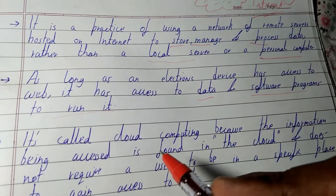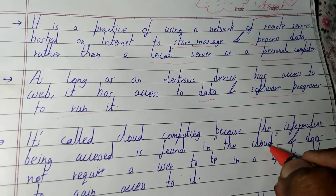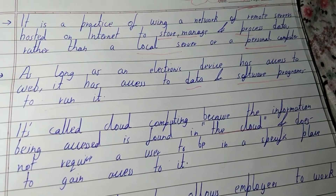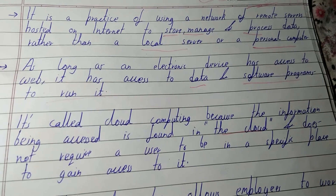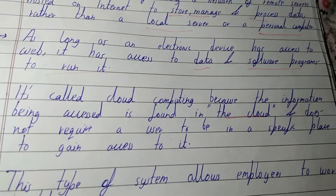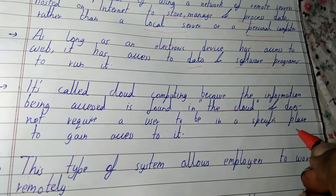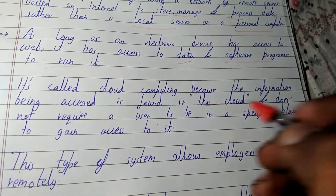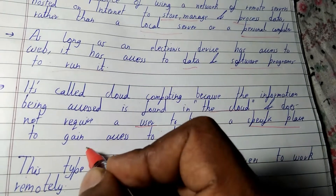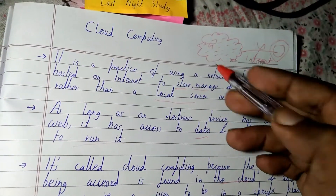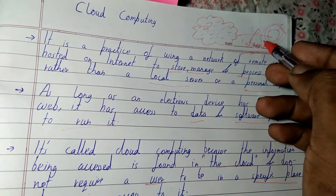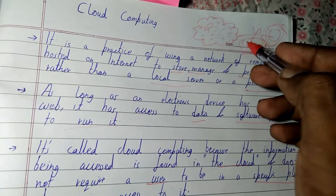It is called cloud computing because the information being accessed is found in the cloud — a virtual cloud where you can store, process, and manage data. It does not require a user to be in a specific place to gain access. The user can be in any part of the world, in any country, as long as they have access to the internet.